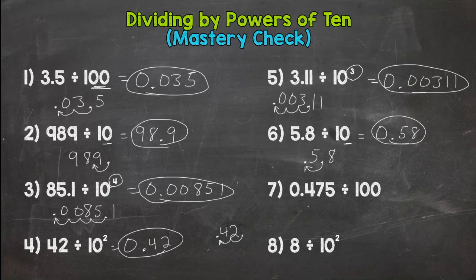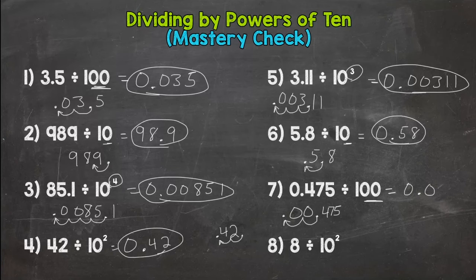Number seven: we have 0.475 or four hundred seventy-five thousandths and we're dividing by 100. So we're already starting with a number less than a whole and we're dividing it by 100, so we are going to get a very small number here. Two zeros, move the decimal twice: one, two. So we get 0.00475 or four hundred seventy-five hundred thousandths.